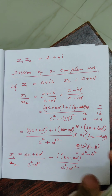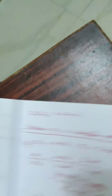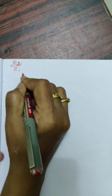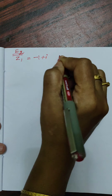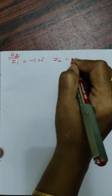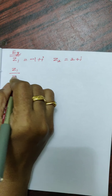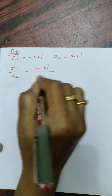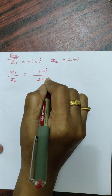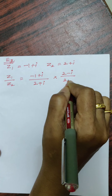To summarize: we multiply numerator and denominator by c minus id, the conjugate of c plus id. I will deal with this chapter in the next class. Now let me do an example. Let z1 equal to minus 1 plus i and z2 equal to 2 plus i. We want to find z1 by z2.